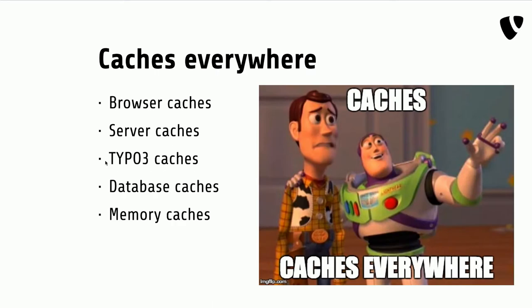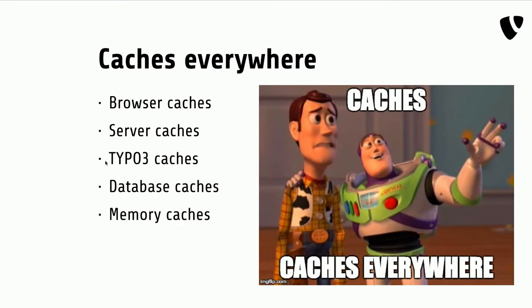I want to show you what kinds of caches there are. First of all, the browser does a lot of caching. And if the browser is not allowed to cache something, then the server might cache something — CDNs, proxies, memory caches, whatever you put in place with your Nginx or Varnish. And then TYPO3 does some internal caching. And then we have the whole topic of the caching framework — where do you want to store this caching data? In memory, your database, or the file system?